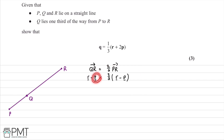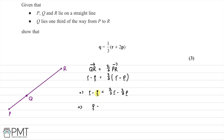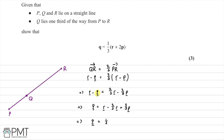Now we rearrange and solve for the position vector Q, as the question asks. We multiply out the brackets on the right hand side, giving R minus Q equals two thirds R minus two thirds P. We want to rearrange for Q, so we add Q to both sides, then subtract two thirds R and add two thirds P to the other side. This leaves us with Q equals R minus two thirds R plus two thirds P.